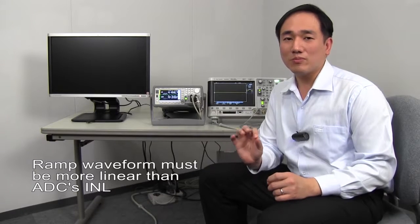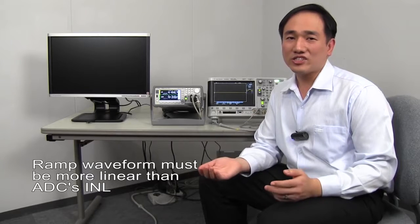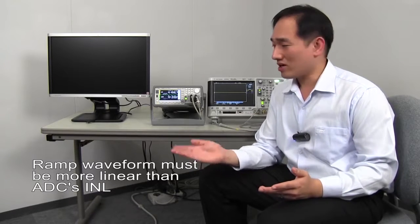To evaluate ADC's INL characteristic correctly, ramp wave generated by signal source must be more linear than the ADC's INL. Generally, function generators do not have adequate linearity. So here, I use B2962A with low noise filter as ramp generator.